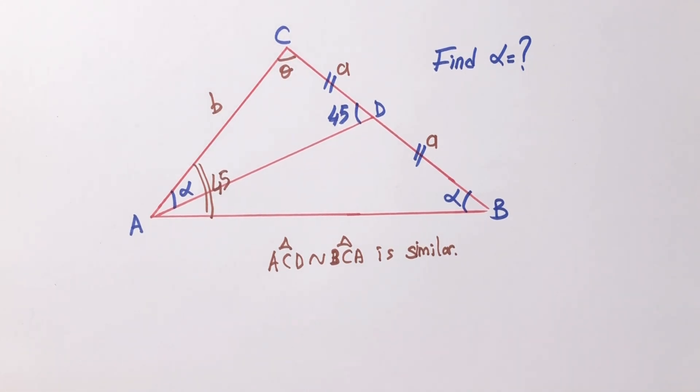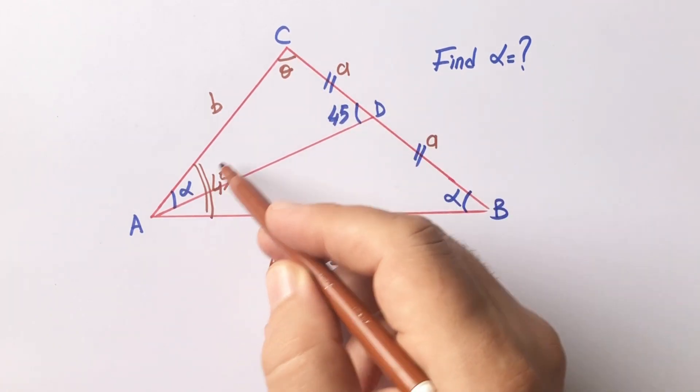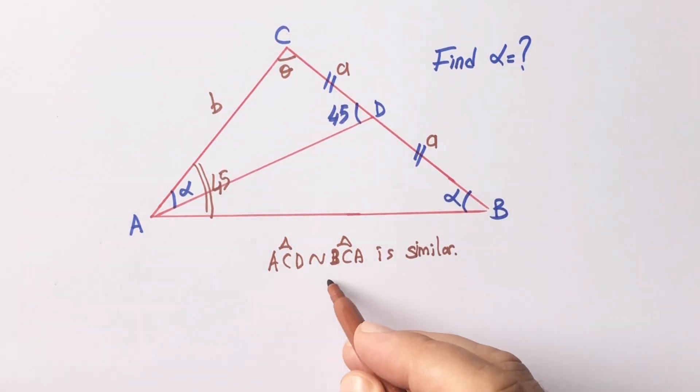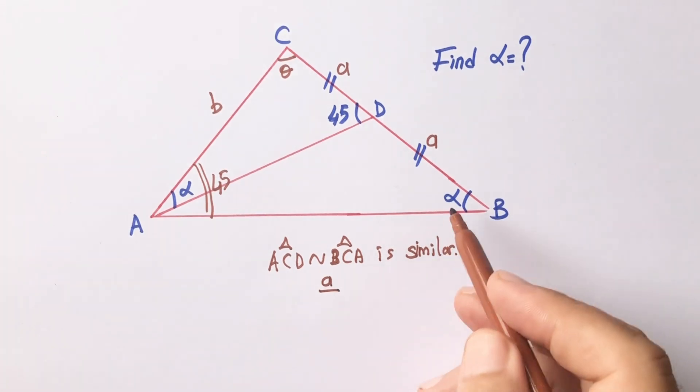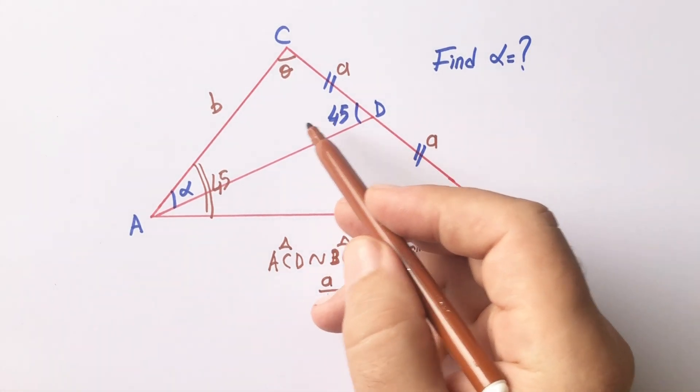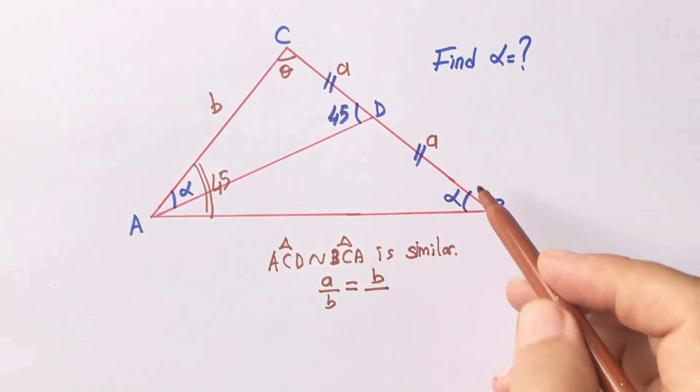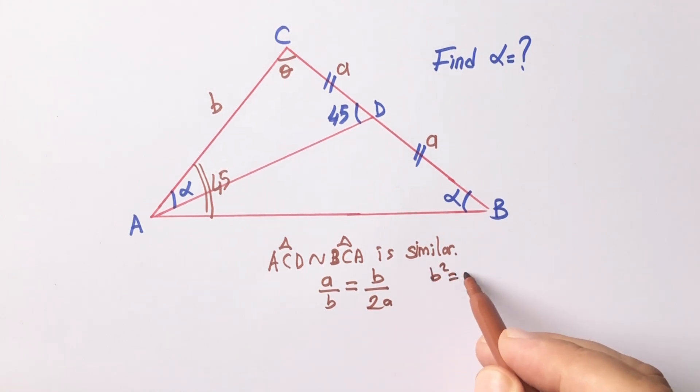Let's write the similarity ratio. In this triangle, A opposite to alpha is A unit over A opposite to alpha is B, equal A opposite to 45 degrees is B unit over A opposite to 45 degrees is 2A units. So B squared equals 2A squared. B is going to be A root 2.